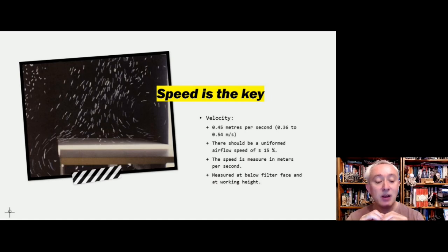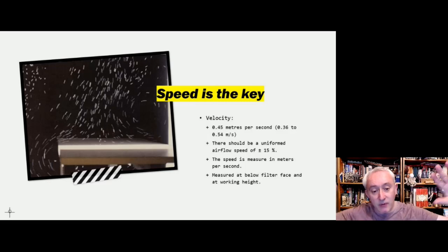So we maintain this by having a relatively fast airflow and air velocity of target 0.45 meters per second, plus or minus 20%, which in reality is 0.36 to 0.54. And also we want to make sure that the airspeed across a HEPA filter is uniform, and by uniform that's within plus or minus 15% of each value.